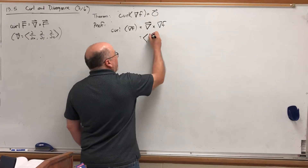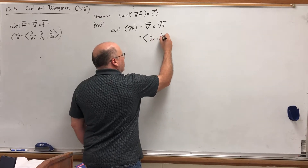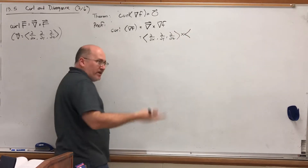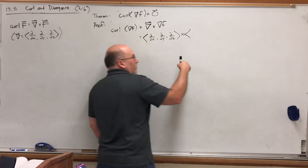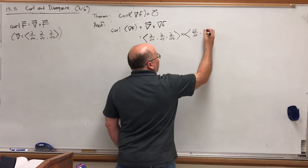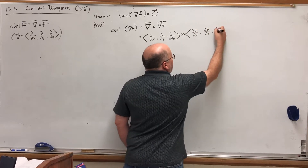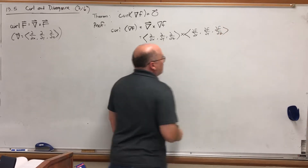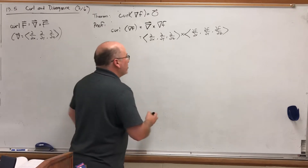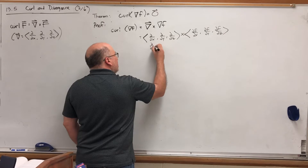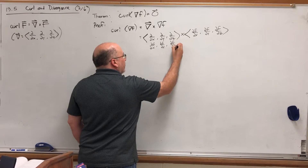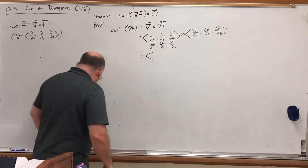The del operator is partial with respect to x, partial with respect to y, partial with respect to z. Cross — well, what's the gradient? The gradient takes a scalar function and makes a vector field out of it by taking partial of f with respect to x, partial of f with respect to y, partial of f with respect to z. We find that cross product the same way we normally do: write the second vector's components underneath the first vector's components — partial f/∂x, partial f/∂y, partial f/∂z — and then find the cross product using two-by-two determinants.